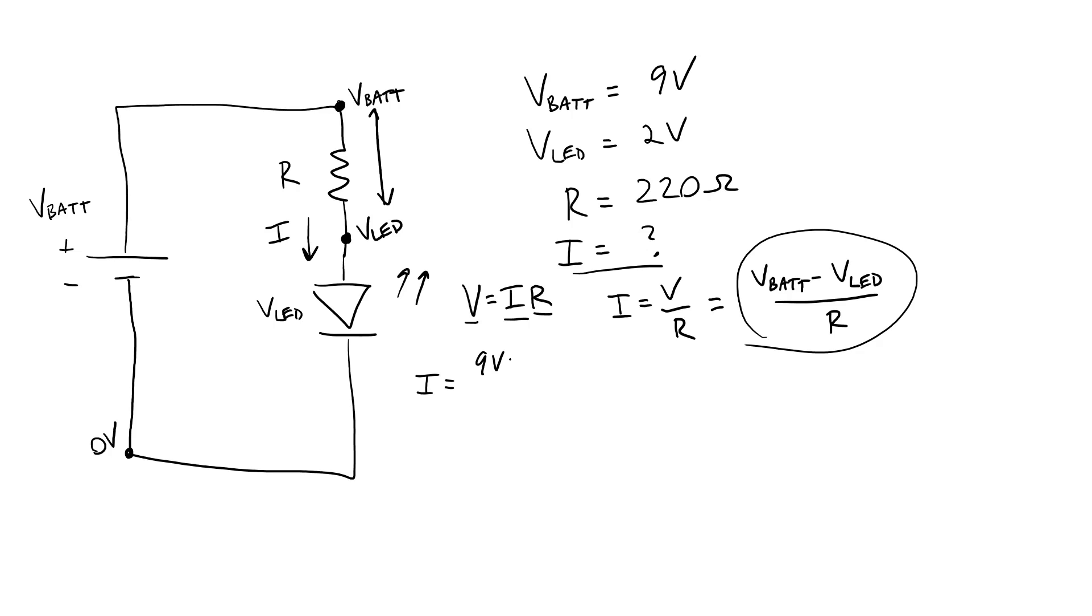We have current equals nine volts minus two volts over 220 ohms. And if you punch that into a calculator, you will get 0.0318 amps or 31.8 milliamps.